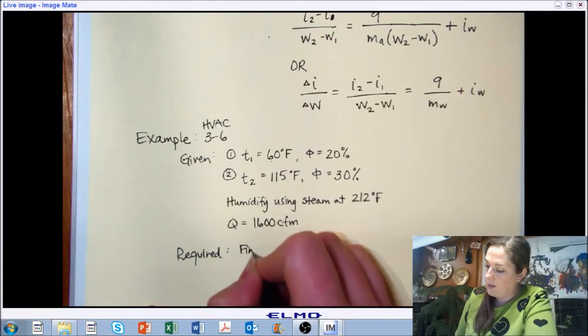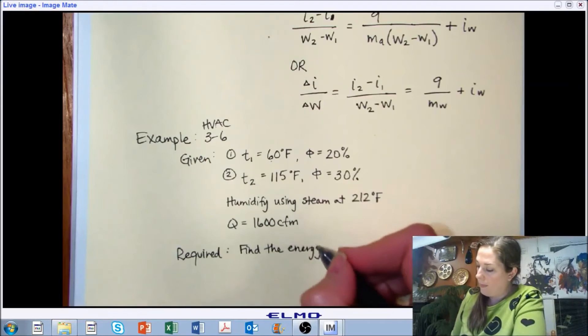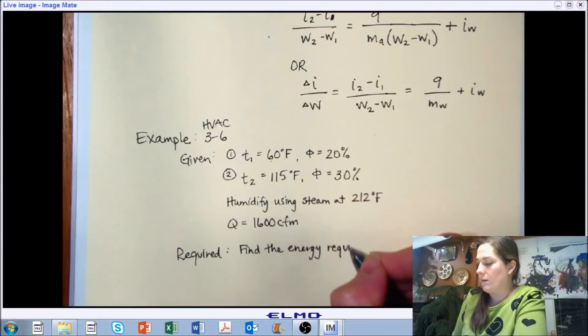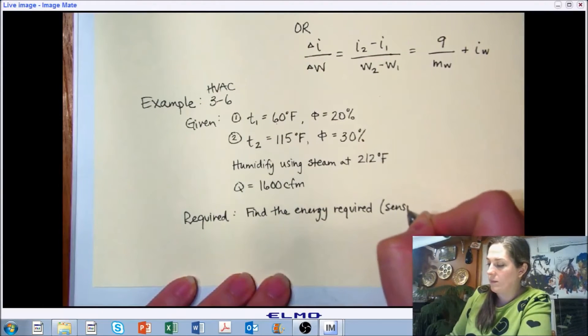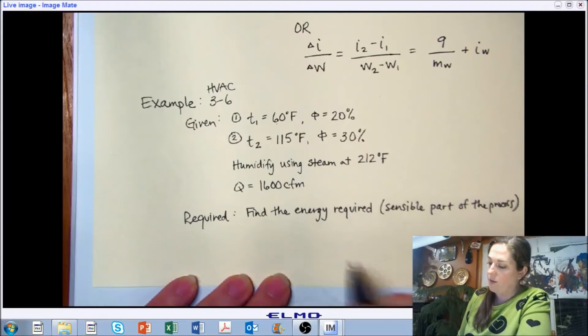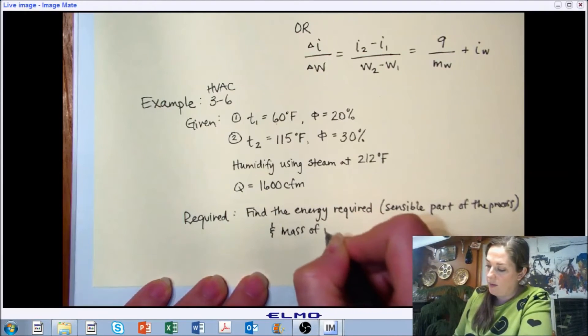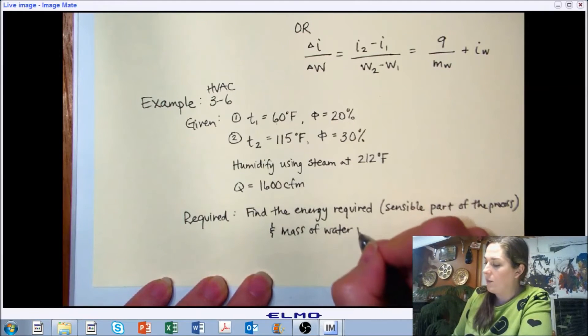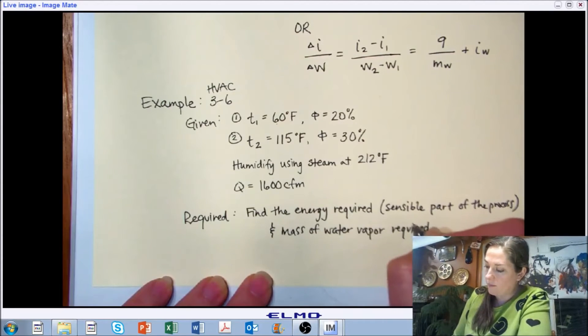We're asked to find the energy required. And this is referring to the sensible part of the process. I'm not sure that the book's description of this is clear on that part. So, find the energy required for the sensible part of the process. And also, the mass of water vapor that we need to change the states as required.